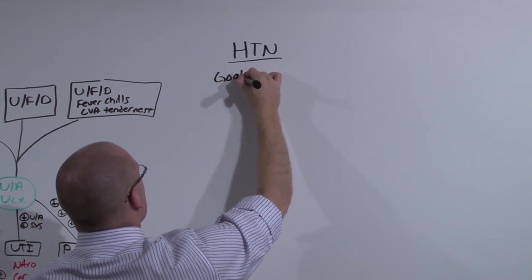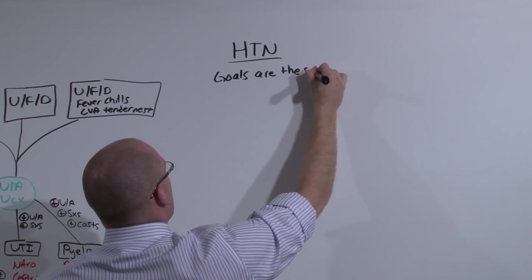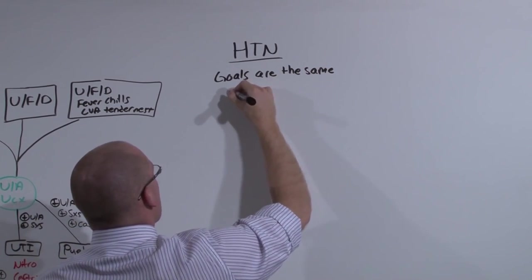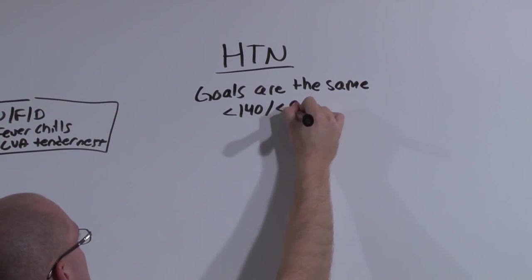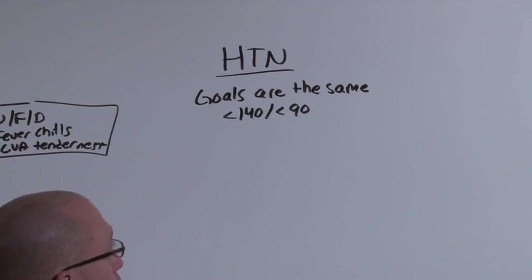When they get pregnant, the goals are the same. If they have no other comorbid condition, their blood pressure goal is less than 140 over less than 90. If they do have comorbid condition, the goal will be lower.